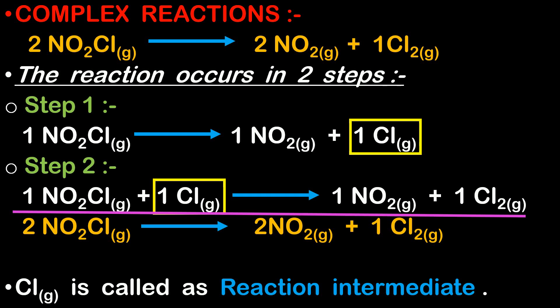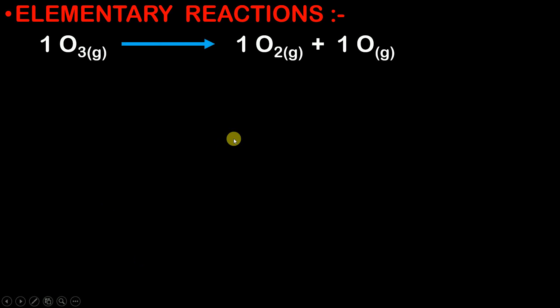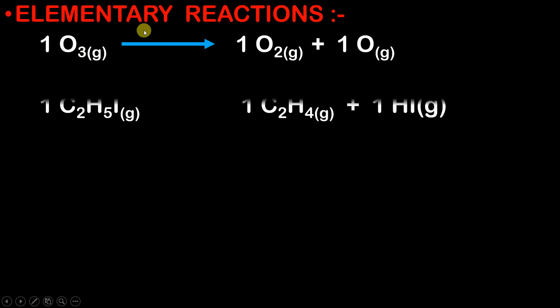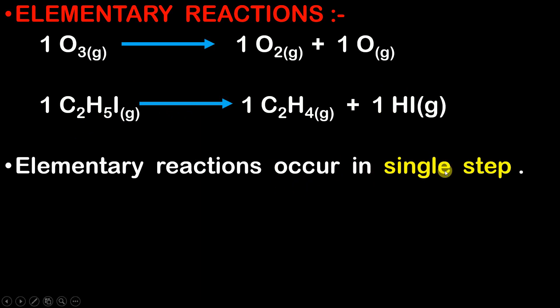Now let us understand what elementary reactions are. In this equation, there are no multiple steps involved — no further simpler steps. This reaction itself occurs in a single step, so it is called an elementary reaction. Another example: one mole of C2H5I gives one mole of C2H4 plus one mole of HI. All reactions which occur in a single step are called elementary reactions.